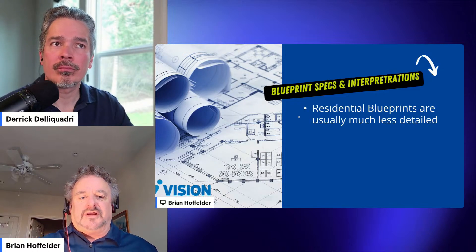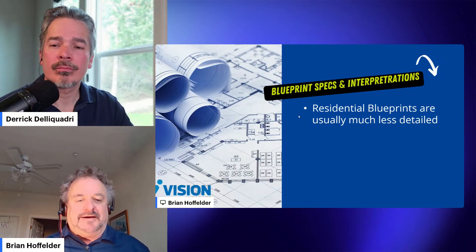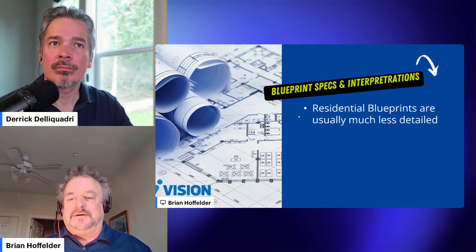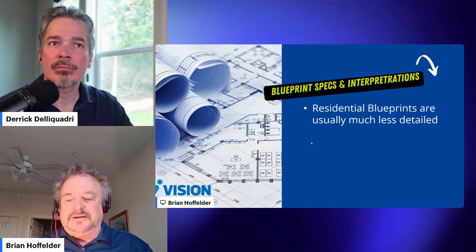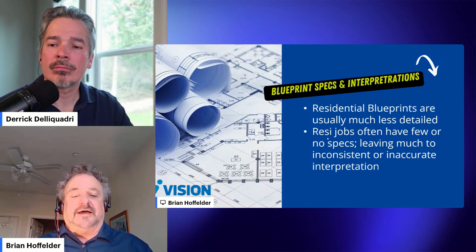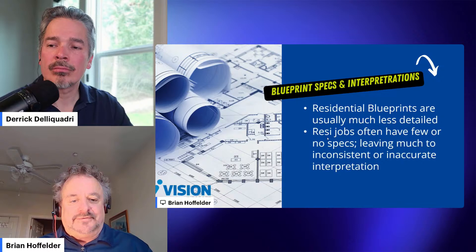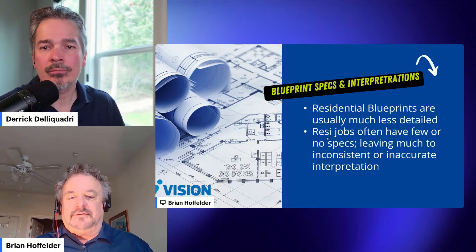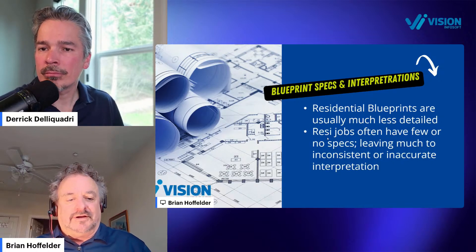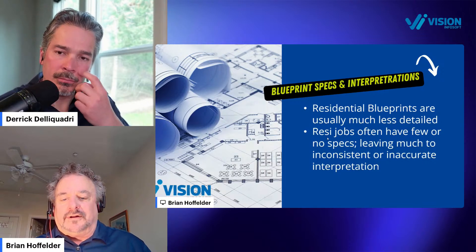One of the problems with bidding residential work is that residential blueprints are usually much less detailed. You'll be lucky if they even lay out all the locations of the electrical outlets and fixtures. Sometimes they don't even do that, and they won't tell you the amperage of the outlet — you just have to know or guess or confirm. With commercial work, everything is very detailed and specified. The commercial jobs will have much more detailed specifications, more consistent, and you're not being left to interpret things that are inconsistent and inaccurate.